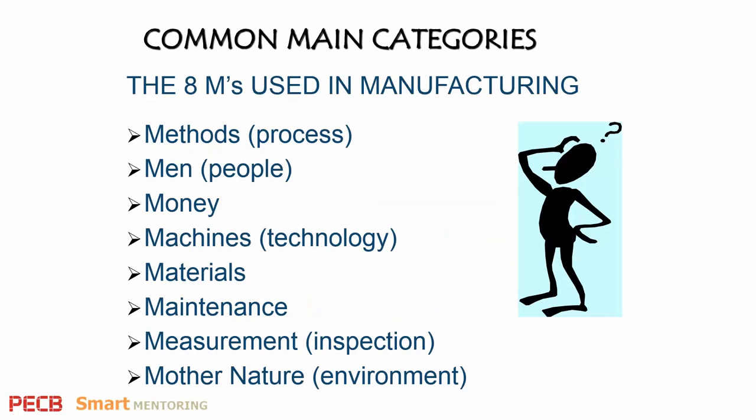Just to give you some ideas on what headers you might use for the cause-and-effect diagrams — these ones you might use in manufacturing. You'll probably not use all eight categories every time you construct your diagram. The most common four used are men, money, machines, and materials, but there are another four as well.